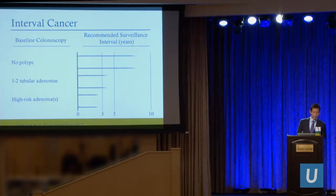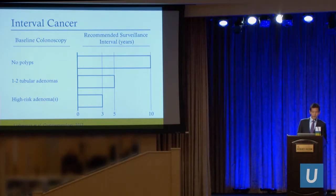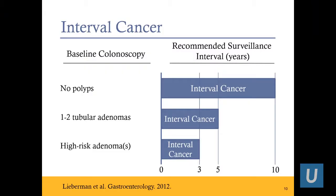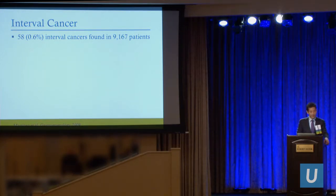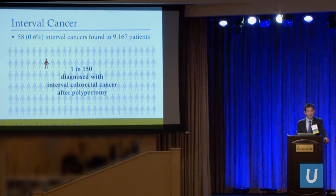An interval cancer is basically any cancer that develops between your first screening colonoscopy and when you tell the patient to come back. Studies found the rate of interval cancer was 0.6% in a population of 9,167 patients — all of whom had a polypectomy at screening colonoscopy. So one in 150 patients was diagnosed with an interval colon cancer after a polypectomy. Many of us do more than 150 colonoscopies a year — that's humbling.